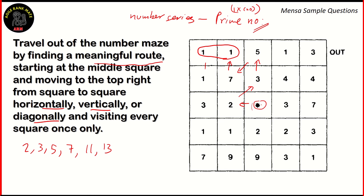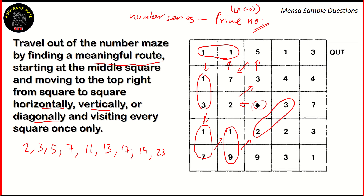After that, the next prime number would be seven, which means you can move down diagonally. The next prime number is 11, so we can move up, and we consider these two tiles to represent 11. The next prime number is 13 — moving down, we take all of that together. The next prime number is 17 — same idea, taking two of the tiles together as one to form the prime number. After that, we have 19 as the next prime number. So these two tiles are together; we move diagonally upwards. The next prime number would be 23.